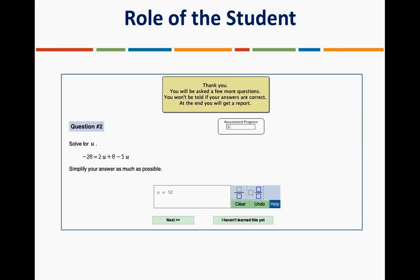In an initial assessment, students won't get any feedback — it won't tell them if they're getting questions correct or incorrect; it's just moving them along, and they should be aware of that. They should always use paper and pencil in ALEKS, especially during an assessment, because they need to work problems out and just put in the final answers. Also talk to students about the 'I haven't learned this yet' button — sometimes it says 'I don't know' depending on the course. Talk to them about what it means, when they should click it, and what it does.